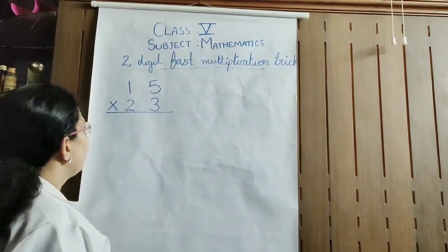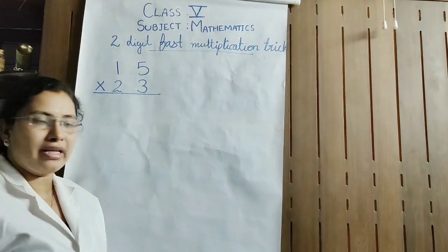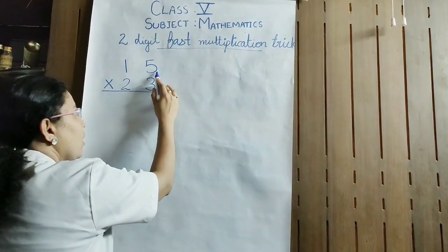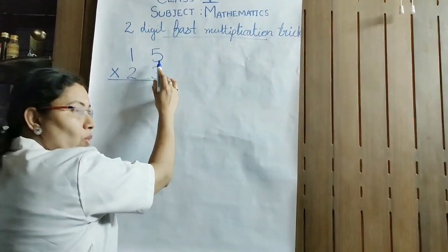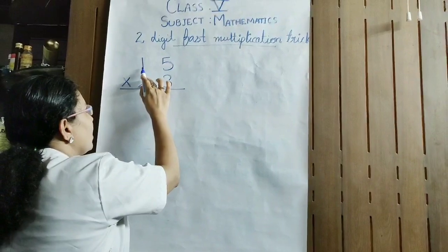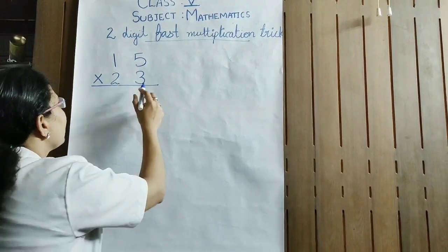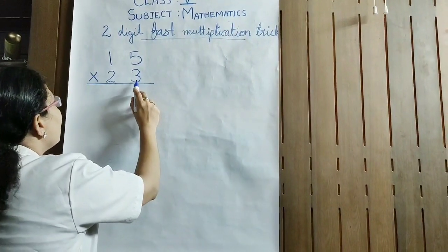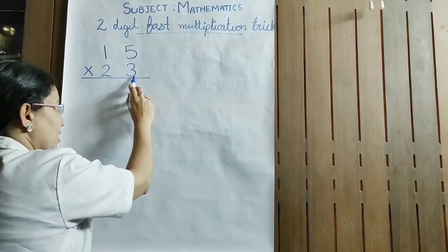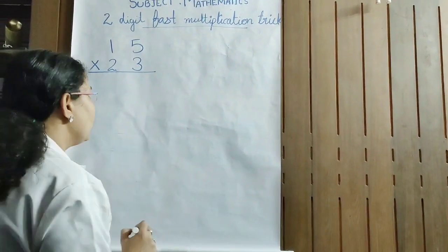First, you know 1's place and 10's place. In number 15, 5 is in the 1's place and 1 is in the 10's place. And in 23, 3 is in the 1's place and 2 is in the 10's place.